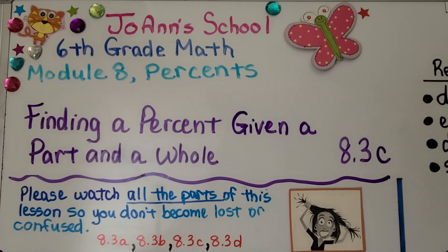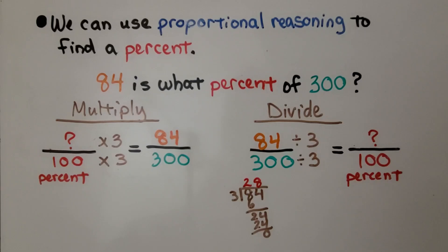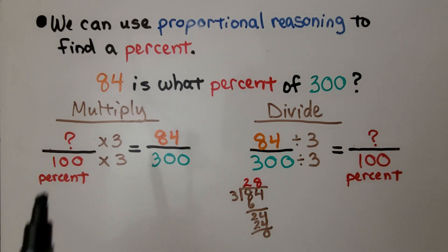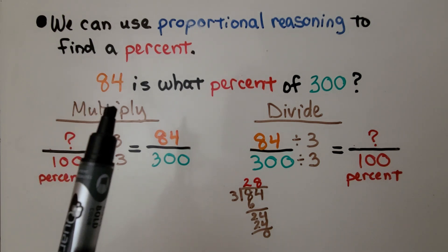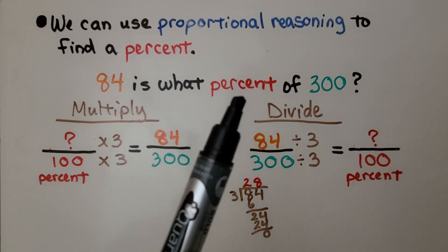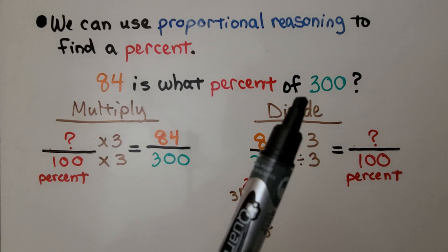Lesson 8.3c: Finding a Percent Given a Part and a Whole. We can use proportional reasoning to find a percent. It's asking: 84 is what percent of 300?